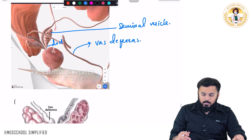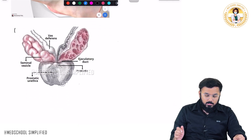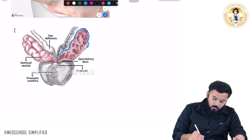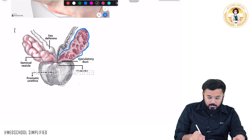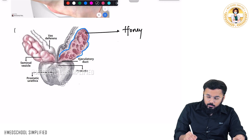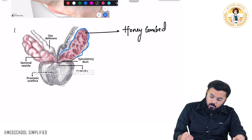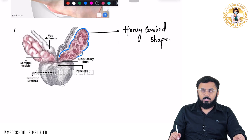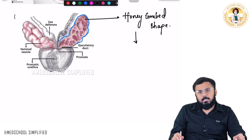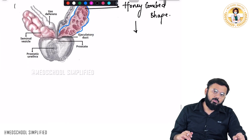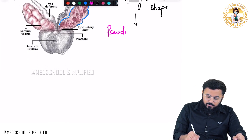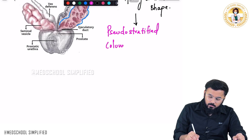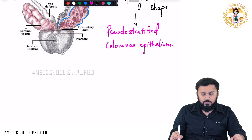If we go deep inside the seminal vesicle, this is how it looks. Inside, the inner wall of the seminal vesicle is completely honeycomb-shaped. There is an epithelium lining it called pseudostratified columnar epithelium.